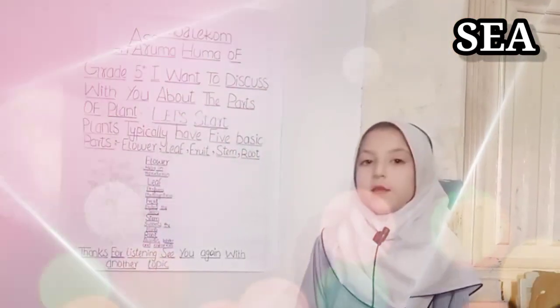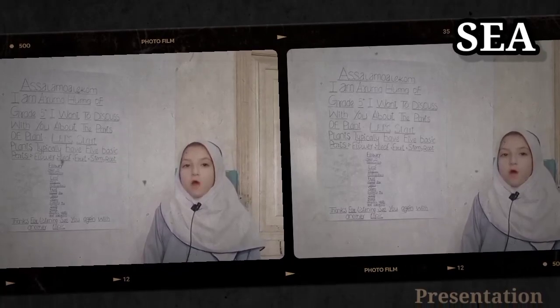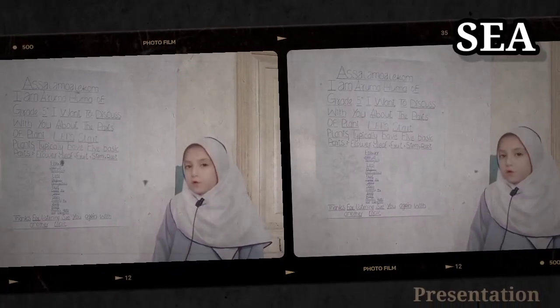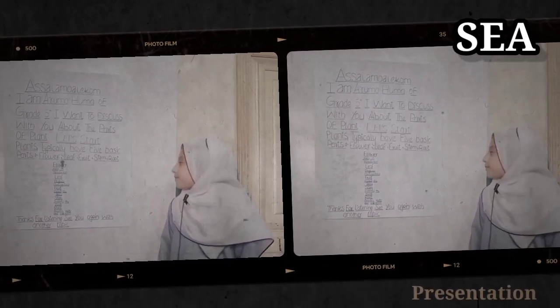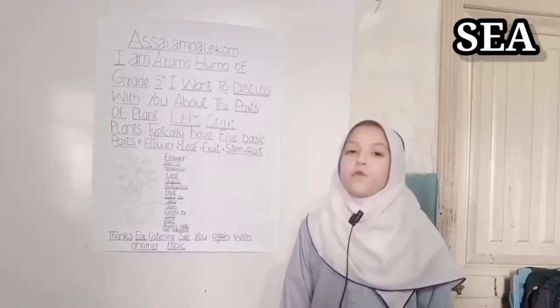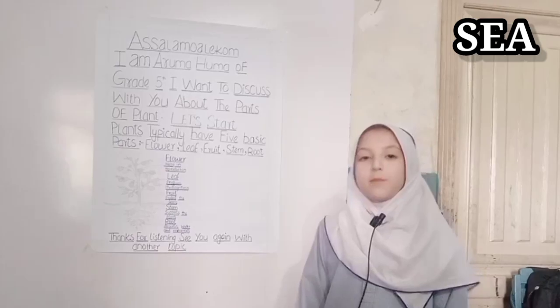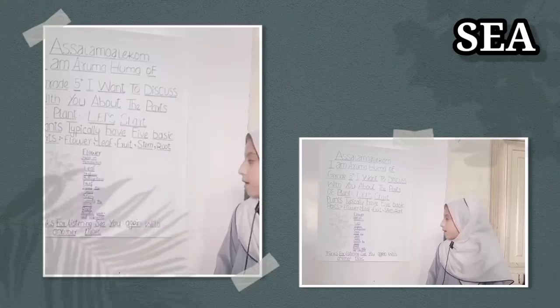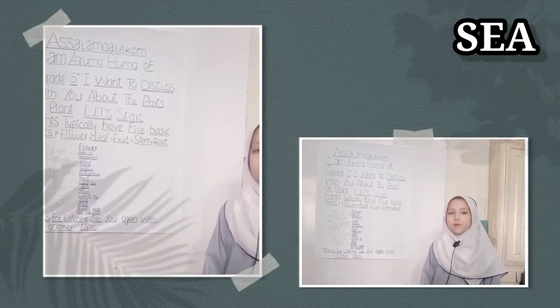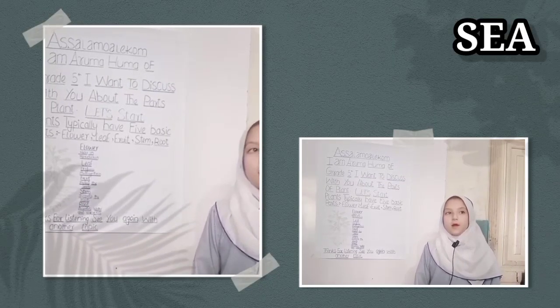Flower helps in reproduction. Leaf performs photosynthesis. Fruit protects the seeds. Stem supports the plant. Root absorbs water and minerals. Thanks for listening.